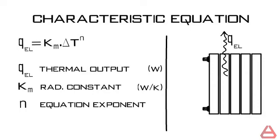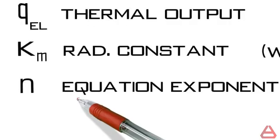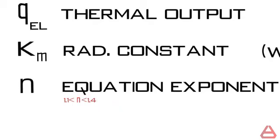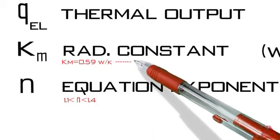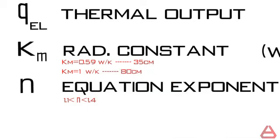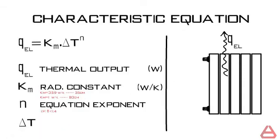It is a unitless exponent. n falls between 1.1 and 1.4 and Km is close to 0.59 for a 35cm radiator element and up to 1 for an 80cm element. Delta T is equal to TR minus T average and its unit is Kelvin.